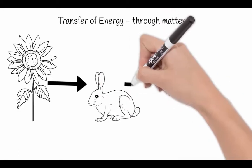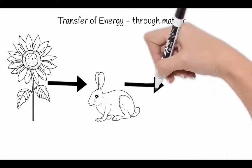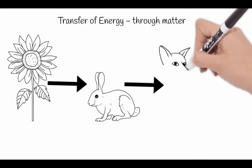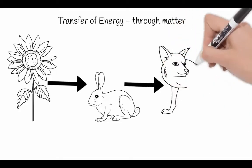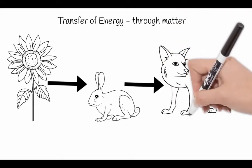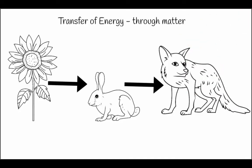And then when that animal is eaten by another animal, the energy is transferred onwards again. But matter is actually being transferred each time. So the plant, or in this case the sunflower or the leaves of the sunflower, actually go into the rabbit. And then when the rabbit is eaten by the fox, the matter is being moved into the fox.